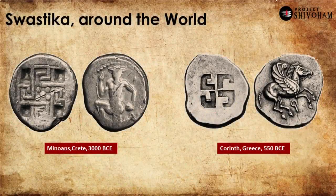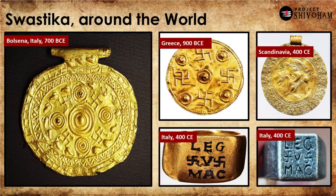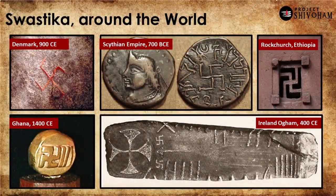Swastika is also found on the coins of ancient civilizations like the Minoan civilization, which is older than the Greek civilization. In Greece itself, we have certain coins with Swastika dating as far back as 550 BC. Swastika is also found on ornaments in the ancient civilizations that thrived in Eurasia. What you're seeing on the screen are some of the oldest ornaments from Italy to Scandinavia, at least 2,000 to 2,500 years ago, currently on display in different museums, having Swastika as part of their aesthetics. Swastika has been found in many places across Europe, Asia, Africa, and some traces in the Americas as well, dating back a couple of thousand years.